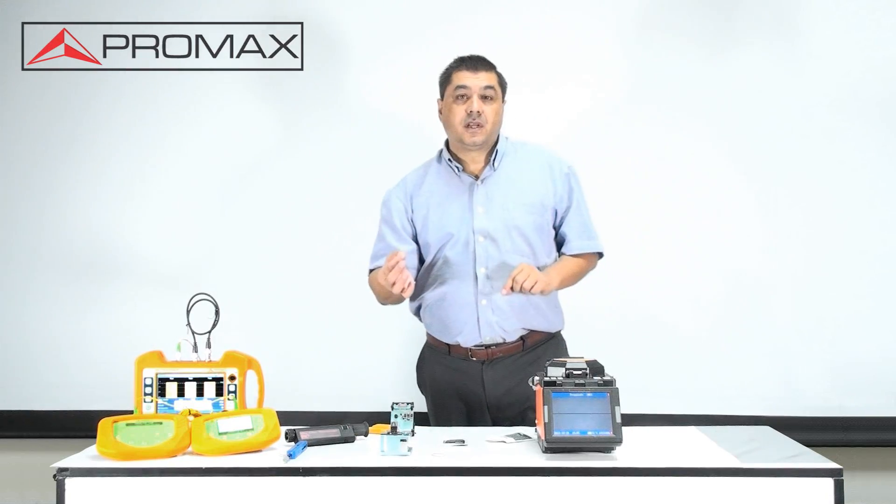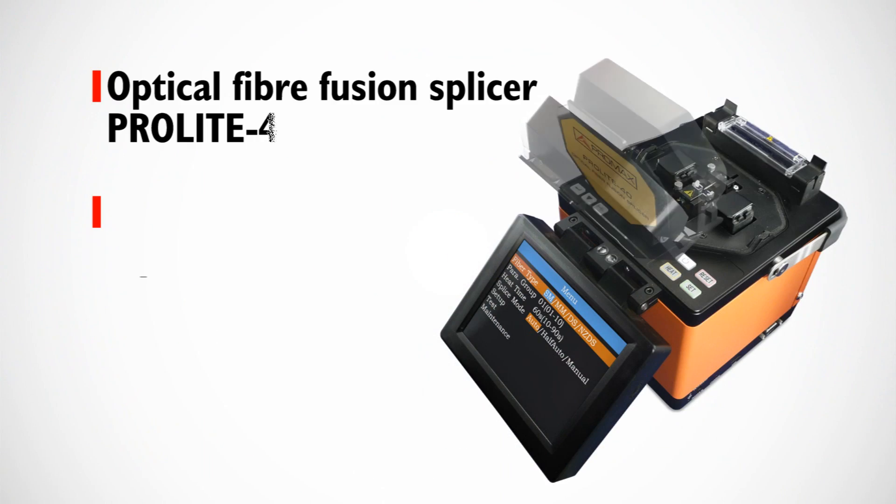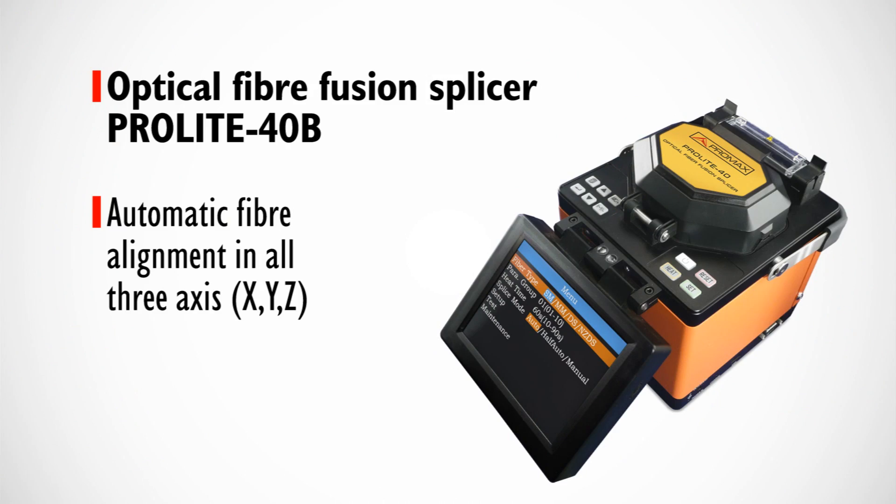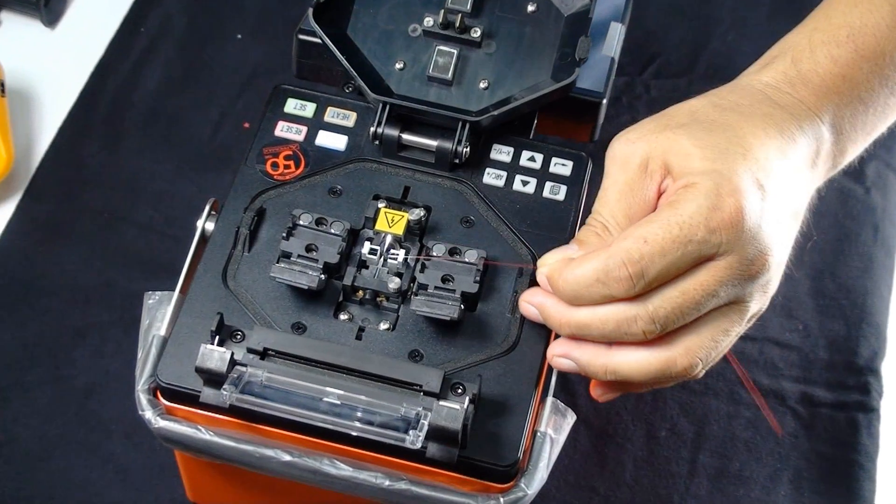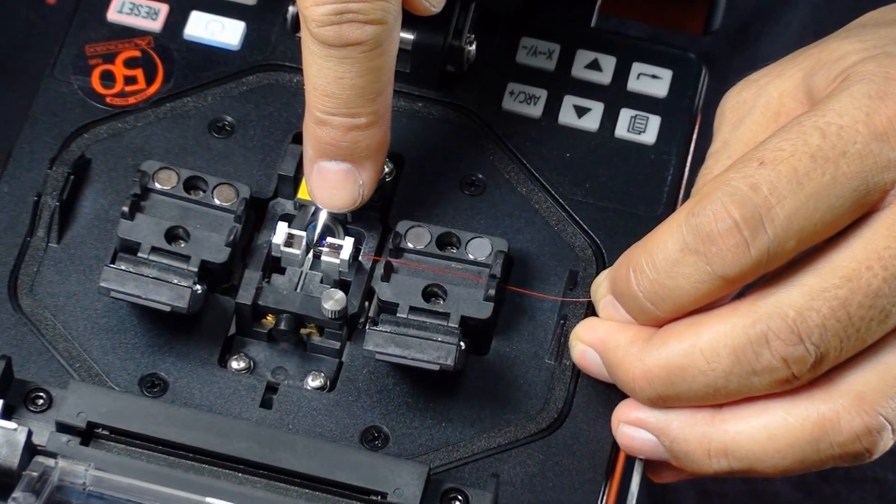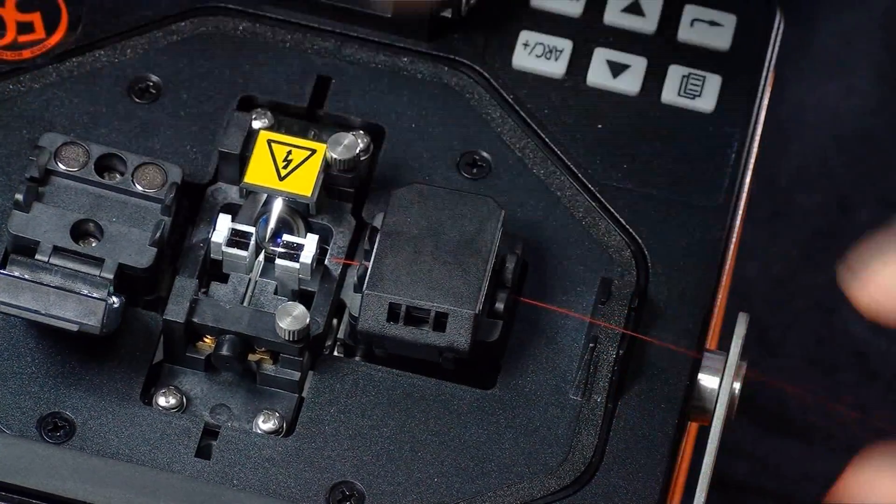Now we are going to put the optical fiber into the fusion splicer. We place the fiber into the guide, trying to leave it as close as possible to the electrodes. We close the clamp to hold the fiber.